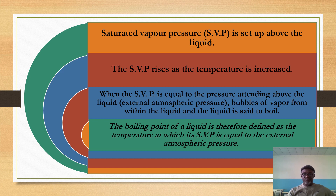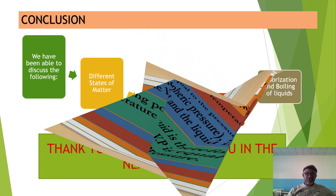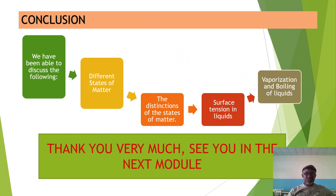To summarize, we have discussed the different states of matter and the distinctions between them. We have looked at surface tension in liquids and vaporization and boiling. Thank you very much, and I hope you enjoyed the class. See you in the next module.